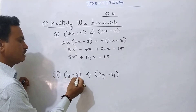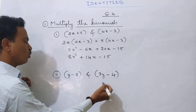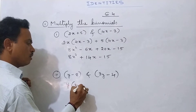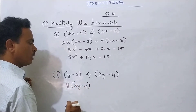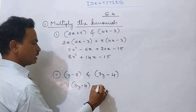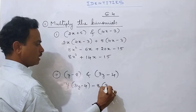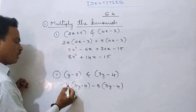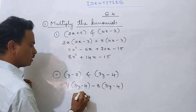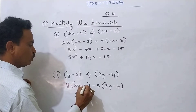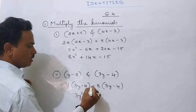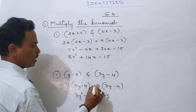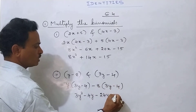Second question: (y - 8) and (3y - 4). First term y into second binomial (3y - 4), then minus 8 into (3y - 4). Multiply: y into 3y becomes 3y², minus y into 4 becomes 4y, then minus 8 times 3 is 24y, minus into minus gives plus, 8 times 4 is 32.